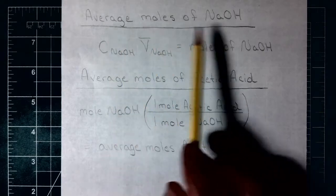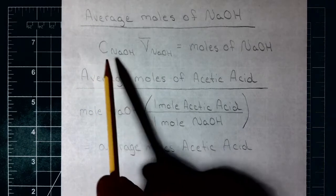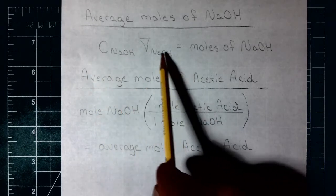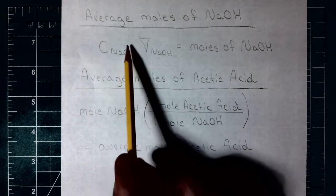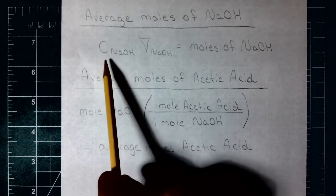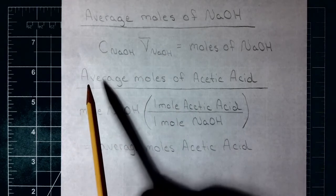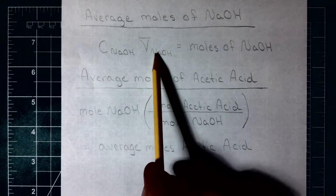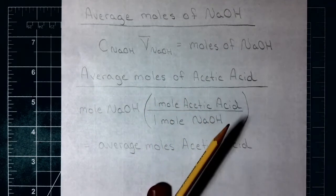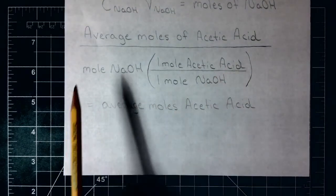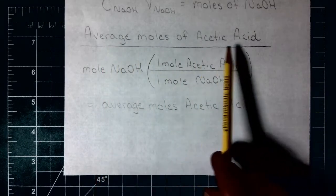Then we'll calculate the average moles of sodium hydroxide it took to titrate the vinegar solution. We're going to take the concentration of sodium hydroxide and multiply it by that average volume. Remember that concentration is molarity — moles per liter — so we need to multiply our volume in liters, not milliliters, and that gives us our moles of sodium hydroxide.